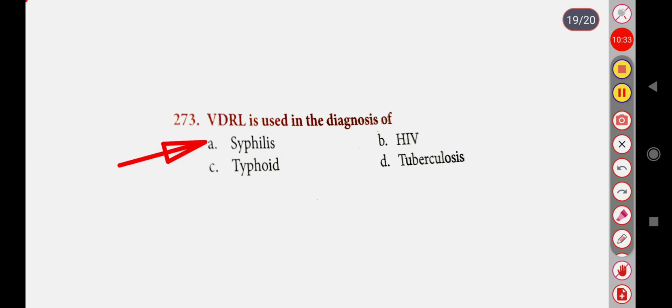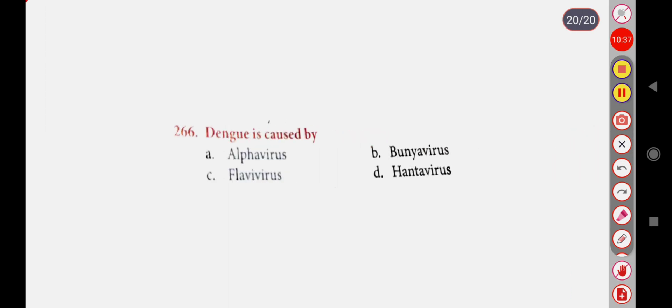Next question: Dengue is caused by — Option A: Alphavirus, Option B: Bunyavirus, Option C: Flavivirus, Option D: Arenavirus. Correct answer is Option C: Flavivirus. Thank you.